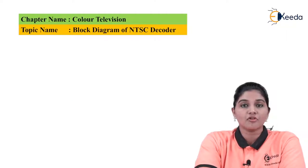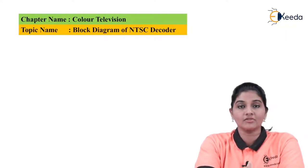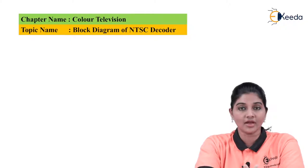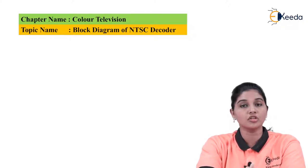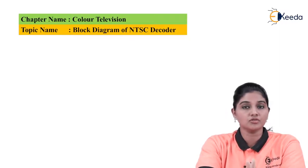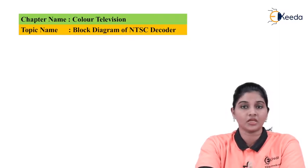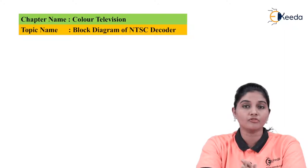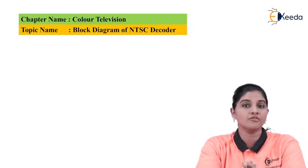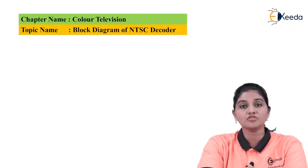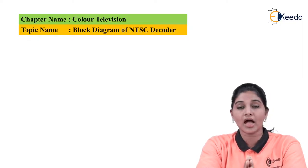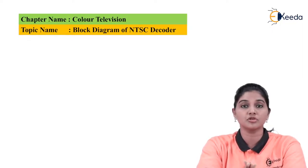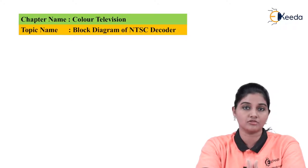NTSC stands for National Television System Committees. The NTSC is basically a standard defined by American companies. NTSC operates on the frequency of 60 hertz and therefore it uses 30 frames per second. Each frame contains 525 lines. In case of NTSC, the subcarrier has a fixed frequency with a precise value of 3.579545 megahertz, which makes it possible to easily recover the signal at the receiver.